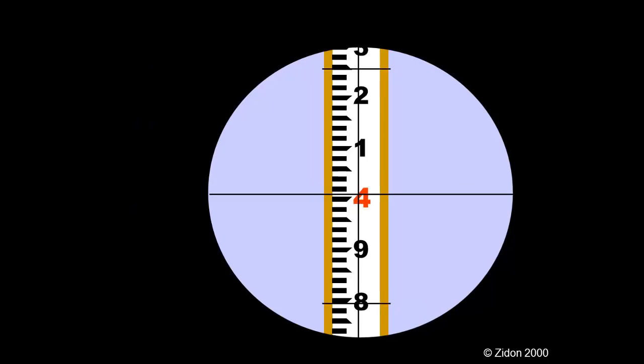Here is a second example. First notice that the rod appears to be smaller, so we know that it is further from the instrument than the first example.